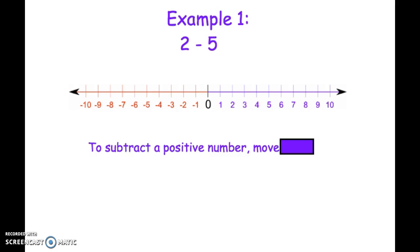Our first example is 2 minus 5. Just like when we're adding numbers, you want to start at 0 and then use that first number 2 to move to. So we're going to look at 2 on the number line.